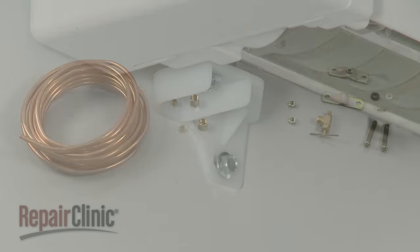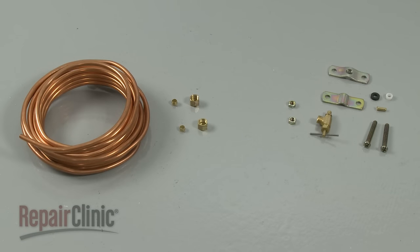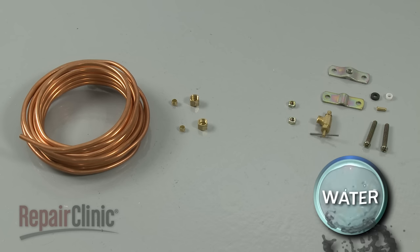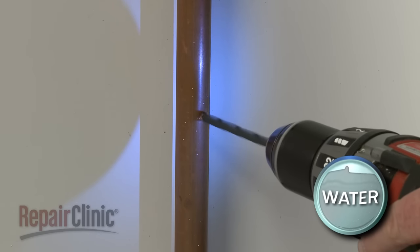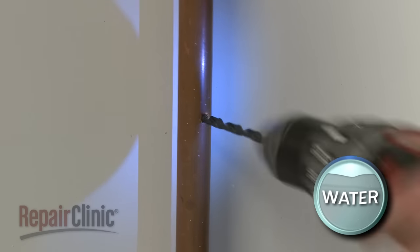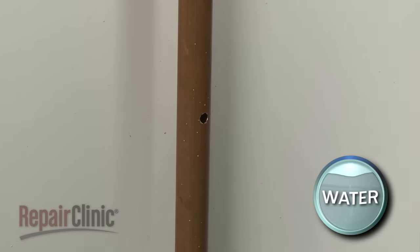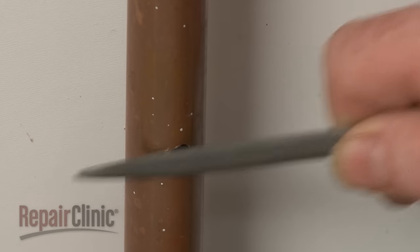If a water supply line and shut-off valve are not already available in the home, you will need to install them. With the cold water supply shut off, use a quarter-inch drill bit to drill an access hole through the front of the nearest cold water supply pipe. File down any rough edges.